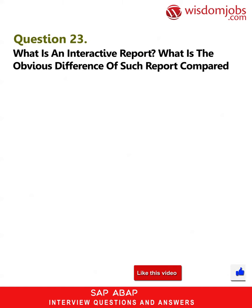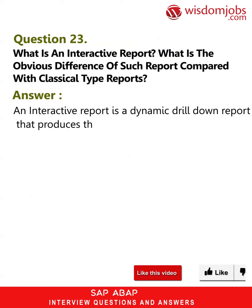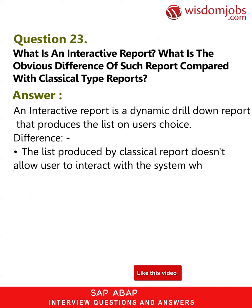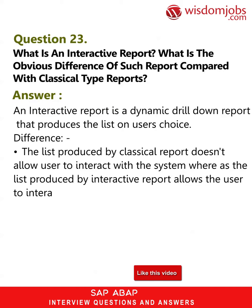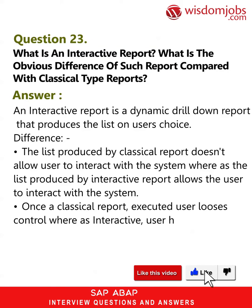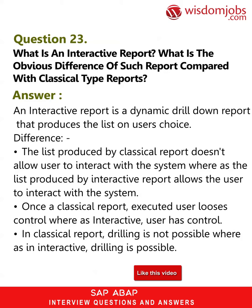Question 23: What is an interactive report, and what is the obvious difference compared with classical reports? An interactive report is a dynamic drill-down report that produces a list based on the user's choice. The list produced by a classical report doesn't allow the user to interact with the system, whereas the list produced by an interactive report does. In a classical report, once executed, the user loses control, whereas in an interactive report, the user retains control. Drilling is not possible in classical reports but is possible in interactive reports.